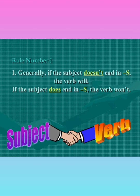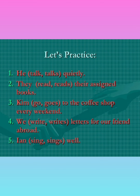So plural subject takes plural verb. In summary: if the subject doesn't end in S, it's singular and the verb will end in S — like 'the student listens.' But if the subject does end in S, like 'the girls,' the verb won't — 'the girls dance.' In this way the subject and verb agree in number. Let's practice — this will show how much you have learned. He — talk or talks — quietly? They — read or reads — their assigned books? Kim — go or goes to the coffee shop every weekend? We — write or writes letters for our friend abroad? Ian — sing or sings well?